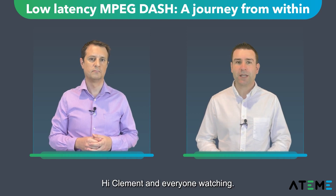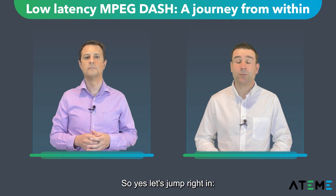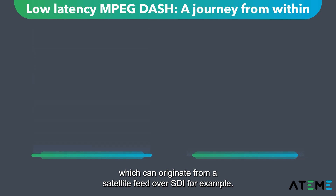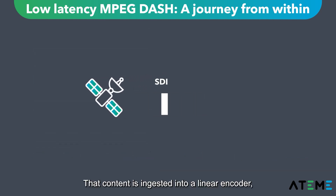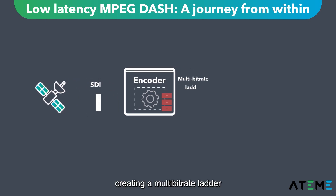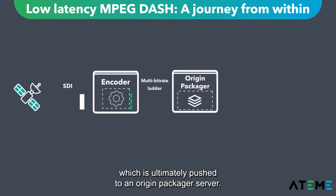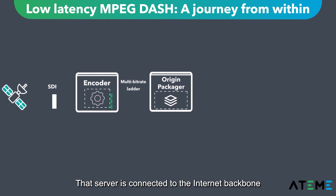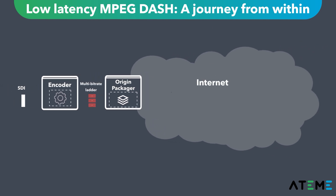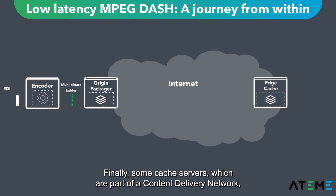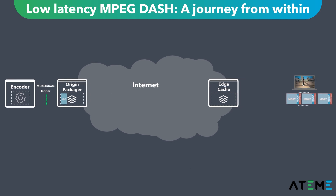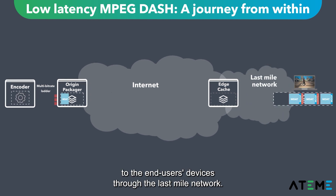Hi Clément and everyone watching. Thanks for having me. Let's jump right in. We'll start with an acquisition signal which can originate from a satellite feed over SDI, for example. That content is ingested into a linear encoder creating a multi-bit rate ladder which is ultimately pushed to an origin packager server. That server is connected to the internet backbone, which is why we call it over the top, or OTT. Finally, some cache servers which are part of a content delivery network will serve the content in the form of video segments to end-user devices through the last mile network.